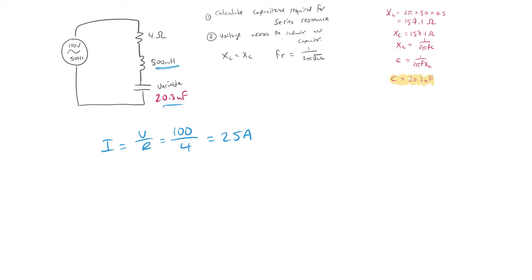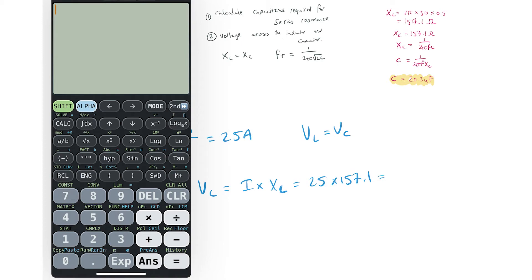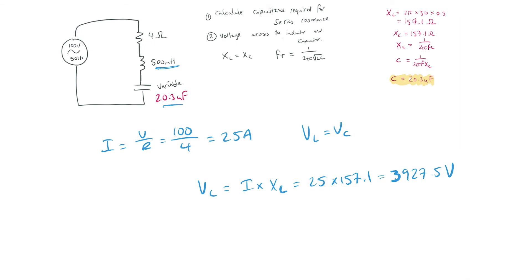At resonance, VL is going to be equal to VC. So VL = I × XL = 25 × 157.1. You should be able to see now that the voltage drop across this inductor is going to be huge — that gives us 3927.5 volts. And since VL equals VC, the voltage drop across the capacitor is also 3927.5 volts.